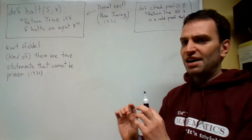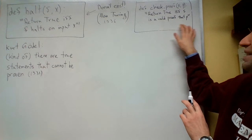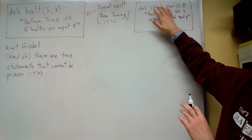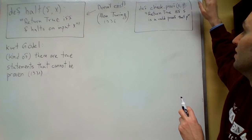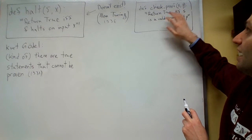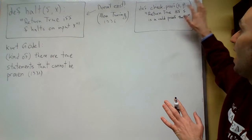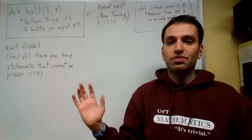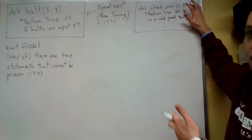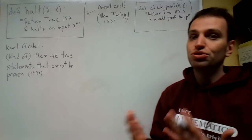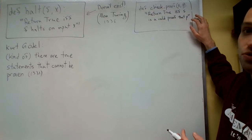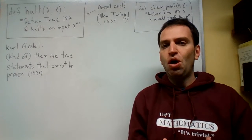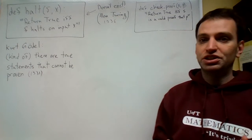We need one more reasonable assumption: that we can write a function called check_proof that takes a string S and a string P, and returns true if and only if S is a proof of P. S is some kind of string — some English sentence or a bunch of sentences — and P is also an English sentence. This returns true if and only if S contains a proof of P. You should trust me that this is a reasonable thing to hope for — you can do this.